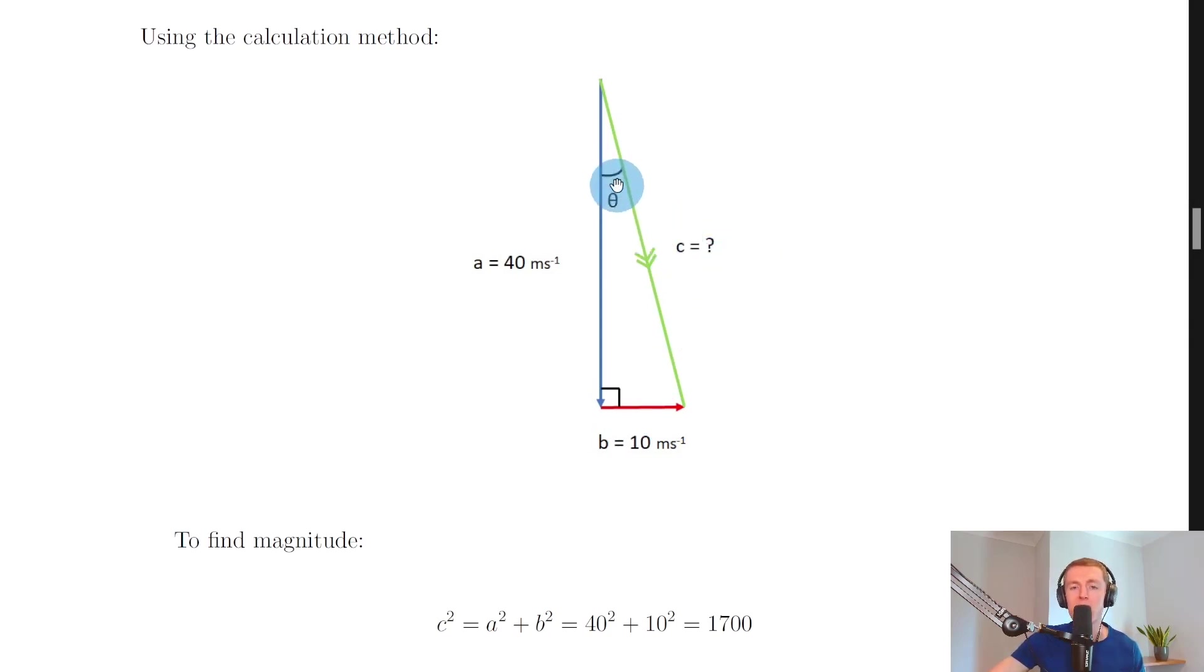Our last label there is the angle theta which remember is always going to be drawn next to the starting point. So if this is my starting point next to the first vector then that's my angle theta in there.